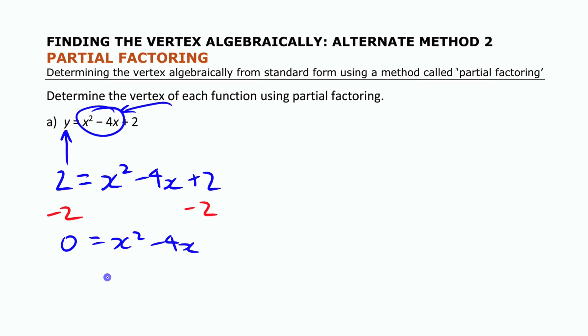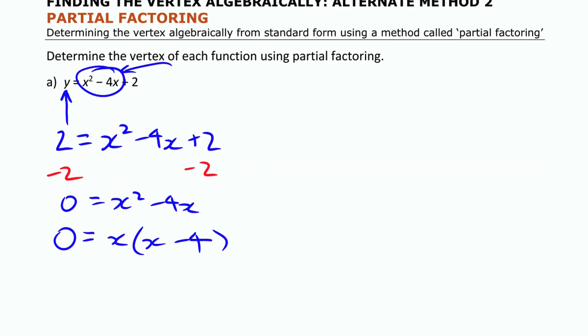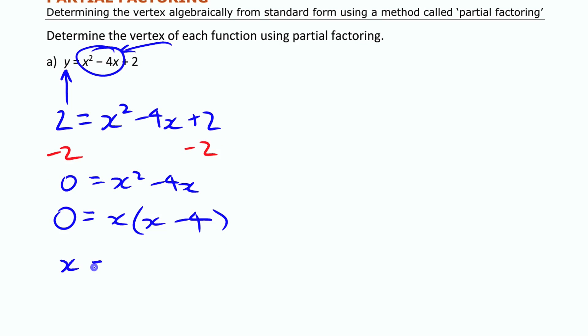Now, what that's going to tell me here is that I can always factor out a common factor of x if I do it right. If I choose the y-intercept to sub in as my y-value, then I'm always going to get it to look like that, to have that common factor of x. And that's going to tell me that the two values here, one of them is 0, one of them is 4.